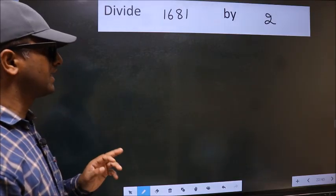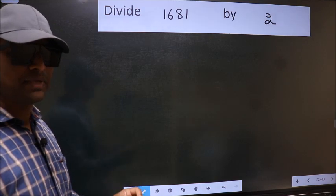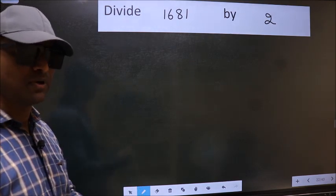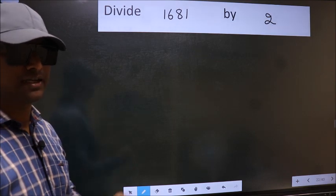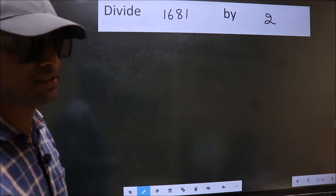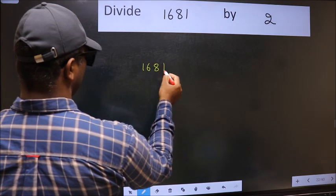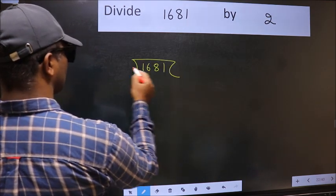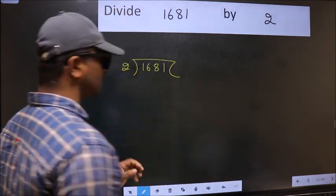Divide 1681 by 2. While doing this division, many do this mistake. What is the mistake that they do? I will let you know, but before that we should frame it in this way: 1681 and 2 here.